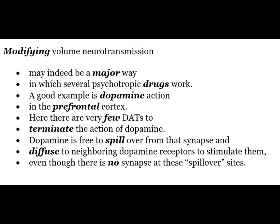Modifying volume neurotransmission may indeed be a major way in which several psychotropic drugs work. A good example is dopamine action in the prefrontal cortex, where there are very few mechanisms to terminate the action of dopamine. Dopamine is free to spill over from the synapse and diffuse to neighboring dopamine receptors to stimulate them even though there are no synapses at these spillover sites.